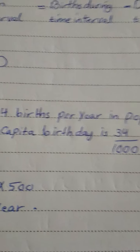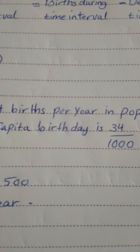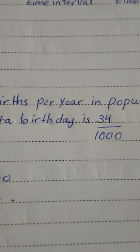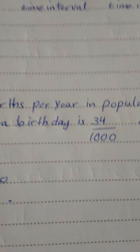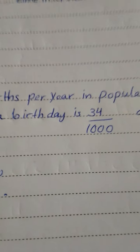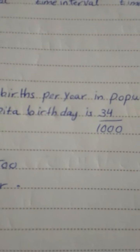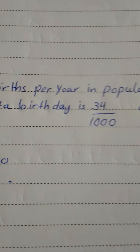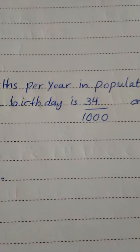The population will increase in size with every birth and with the immigration of individuals from other populations, and it will decrease in size with every death and with the emigration of individuals out of the population. For simplicity here, we will ignore the effects of immigration and emigration; a more complex formulation would certainly include these factors.